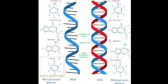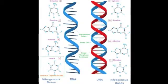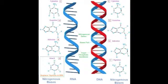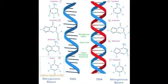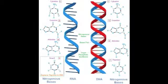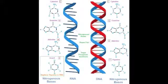In the nucleus, the DNA makes a copy of itself called RNA. Then in a process called translation, the RNA goes to the ribosome to make the new proteins.